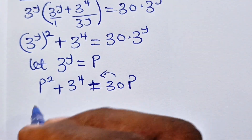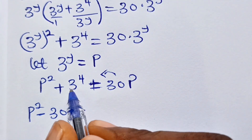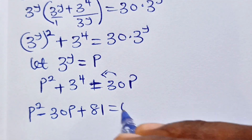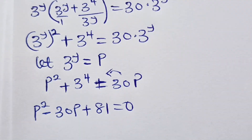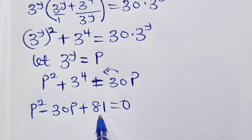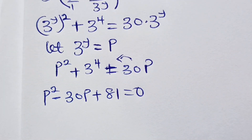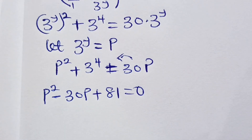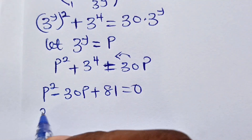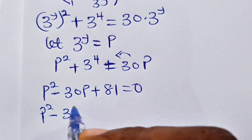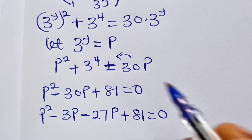Rearranging, we have p² − 30p + 81 = 0. We need two factors of 81 that add up to −30, and those are −3 and −27. So we write p² − 3p − 27p + 81 = 0.